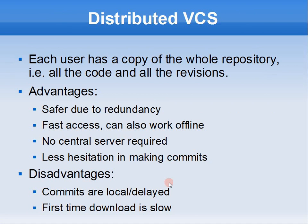So by a distributed VCS, we mean that each user has a copy of the whole repository — each and every change, each and every history, all the source code from scratch. So they can recreate the source code at any point in the past. And why is it good? You have multiple copies of the whole repository, so you have additional redundancy. So if your server goes down, you still have backups, because the copy that you have is itself complete — not even a byte missing from what's on the central repo.